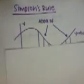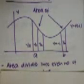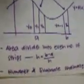So to find the area under the curve y equals f(x) between x equals a and x equals b, you must first divide the area into an even number n of strips of width h equals b minus a over n.